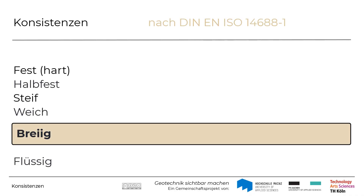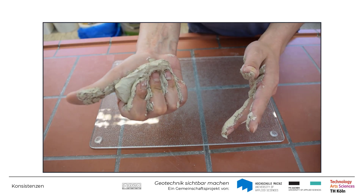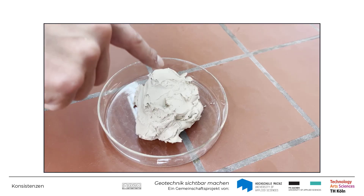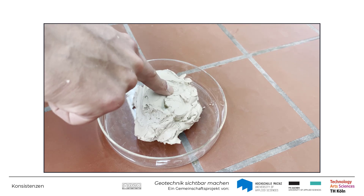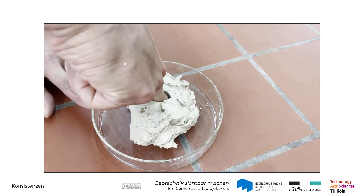In der folgenden Videosequenz sehen Sie den Boden nun mit einem noch höheren Wassergehalt. Dieser liegt nun gerade unterhalb der Fließgrenze. Seine Konsistenz wird mit breig bezeichnet, wenn er beim Pressen in der Faust zwischen den Fingern hindurch quillt. Mit dem Finger kann man ihn leicht bis zu 25 mm eindrücken.